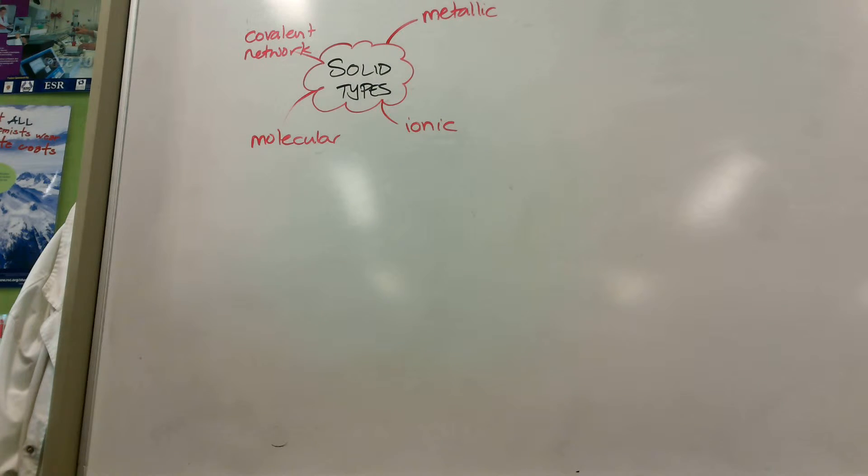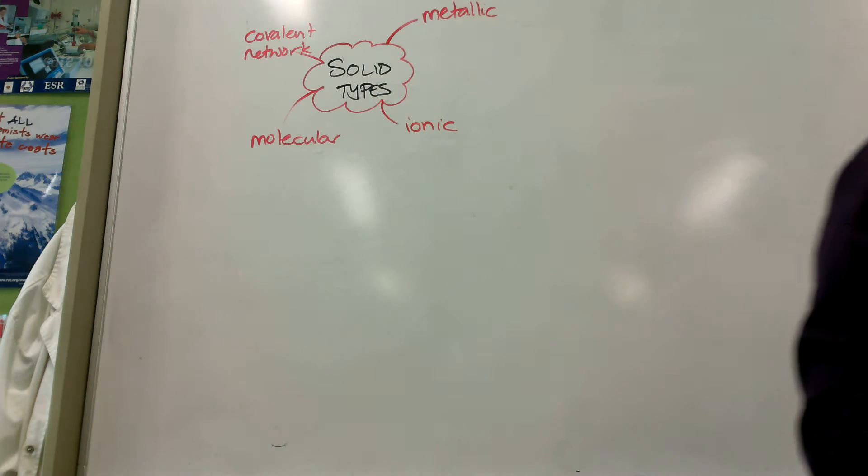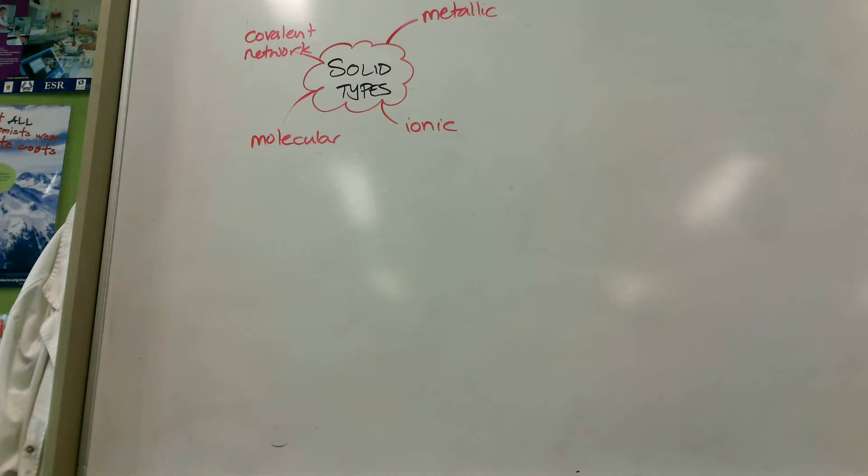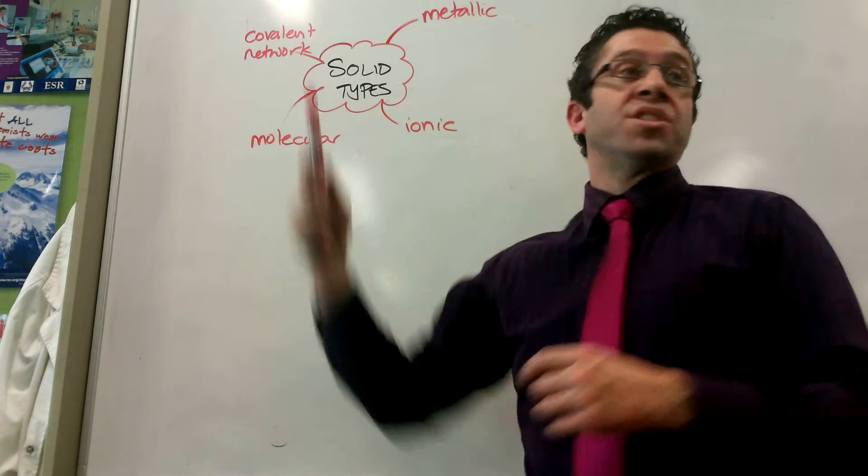So you're going to have a table or a question where it's going to ask you what type of substance is magnesium oxide, or what type of substance is silicon dioxide, or whatever. That's your answer, is one of these, whichever is correct.